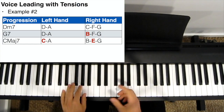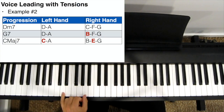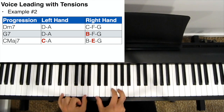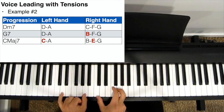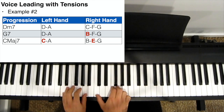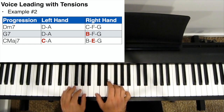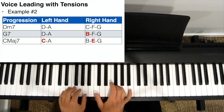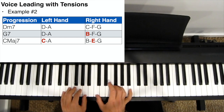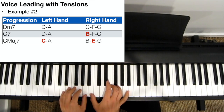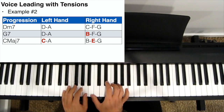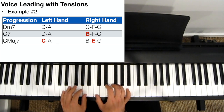Let's take the same chord progression with a different starting voicing: D and A in our left hand, C, F, and G in our right hand. Again, all those notes check out — they're allowed over a minor 7 chord. To transition from D minor 7 to G7, all we have to do is move the C — which is not allowed in the G7 — down a semitone to B. Everything else checks out; we've got the 3rd and the 7th in there, so it all ticks our rules.